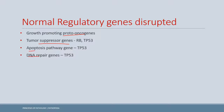Proto-oncogenes are generally not expressed in a well-differentiated cell; however, they may start to express when there is cellular injury or when there is a need for cell growth again. Their abnormal expression — without growth factors or without any physiological demand — is called constitutive behavior, and it causes an increase in synthesis of gene products without physiological demand.